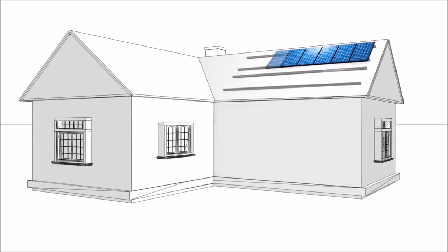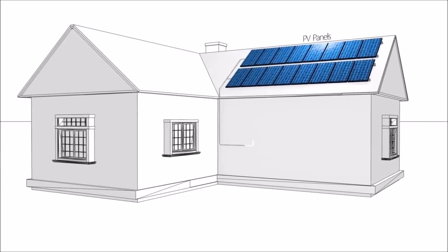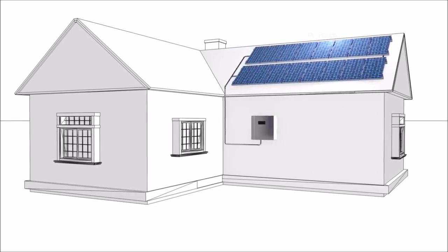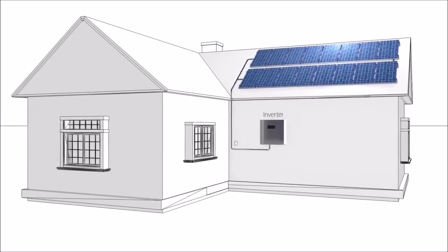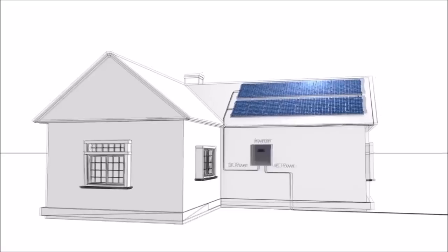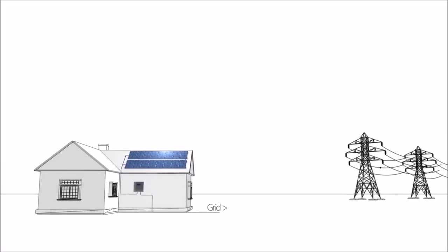A photovoltaic system consists of PV panels, which produce DC power when exposed to sunlight, and an inverter, which inverts the DC power into AC power that is fed into the utility grid.